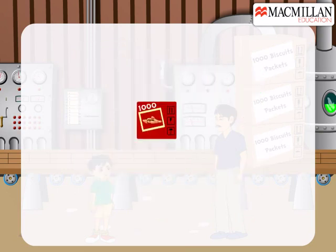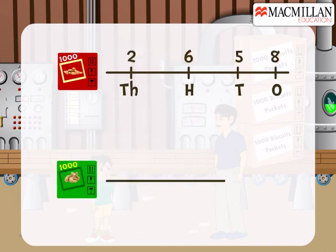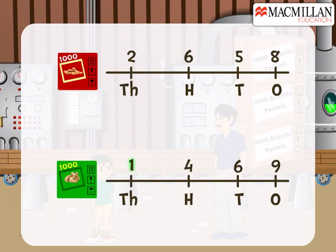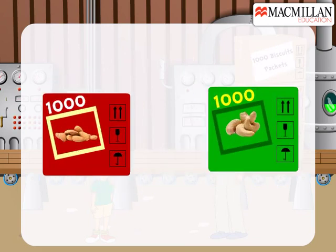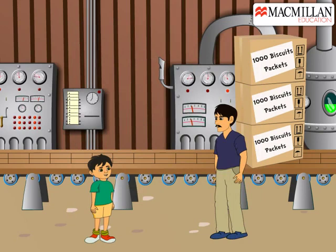Suppose the number of red cartons is two thousand six hundred fifty-eight, and the green cartons are one thousand four hundred sixty-nine. As you can see, for the red cartons the digit in the thousands place is two, and for the green cartons it is one. So the red cartons are more than the green cartons.